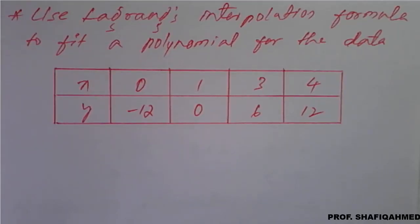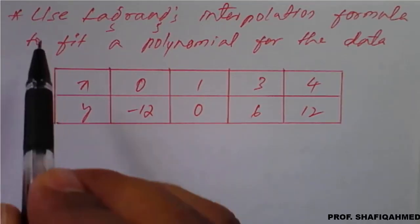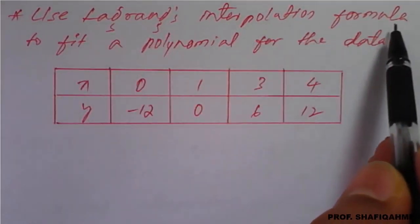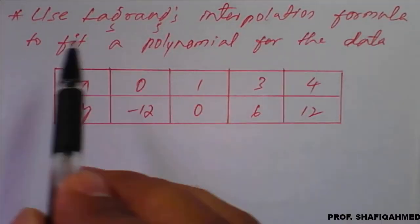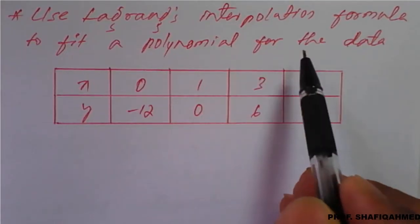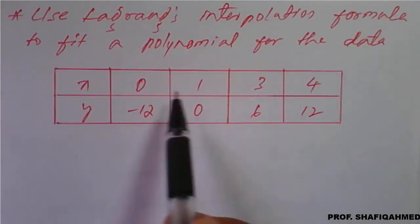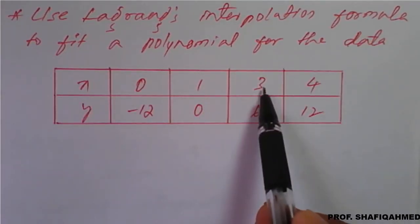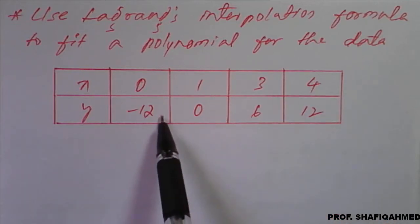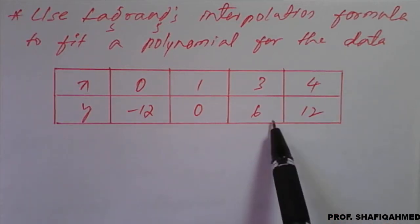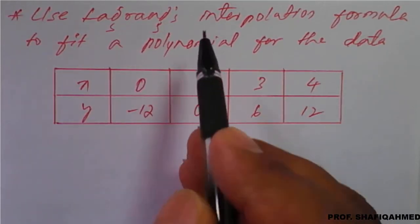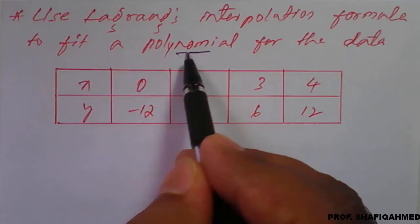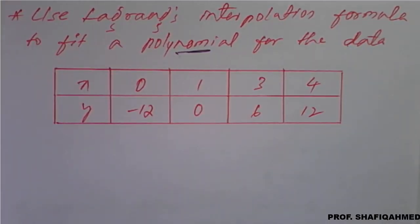In this lecture, we will see a problem based on Lagrange's interpolation formula. The problem is: use Lagrange's interpolation formula to fit a polynomial for the data. X values are 0, 1, 3, 4 and Y values are minus 12, 0, 6, and 12. Using this, we need to apply the formula to get the polynomial.